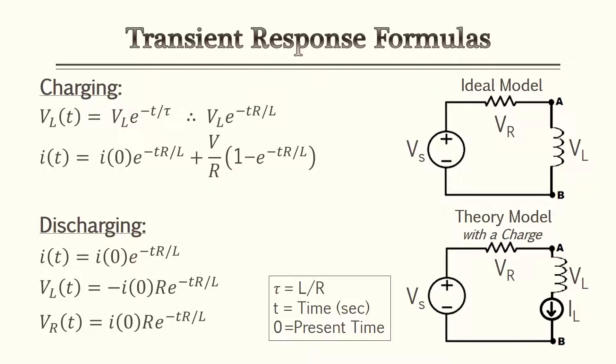To find the transient response of an RL circuit, we'll get familiarized with a few formulas — two charging formulas and three discharging formulas. The idea is to obtain an ideal model which has one voltage source, one resistor, and one inductor. If you can reduce a circuit to this Thevenin equivalent, you can plug and chug values right into these formulas. Also be aware that when an inductor is fully charged, it acts as a current source.